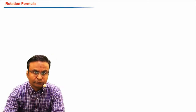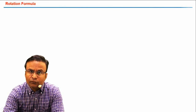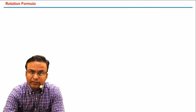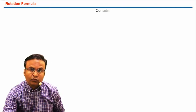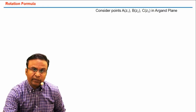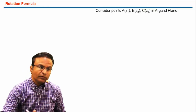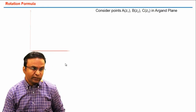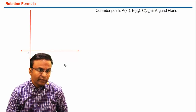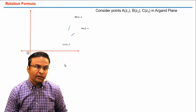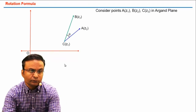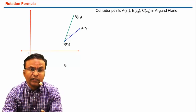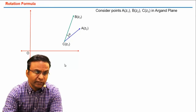For that, consider points A(z1), B(z2), and C(z3) in the Argand plane. Let's plot these points in the Argand plane. Here is our Argand plane, and these are points A, B, C. The angle ACB is theta.